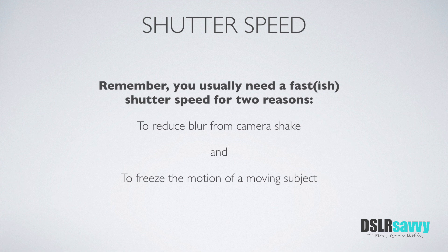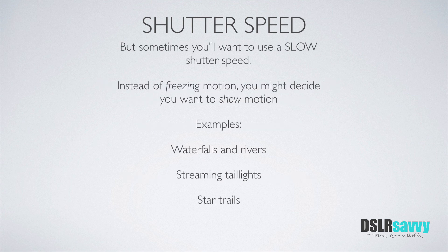To wrap up this lesson: in normal everyday hand-held photography, there are two reasons we're usually going for a fast-ish shutter speed — one is to reduce blur from camera shake, and the other is to reduce blur by freezing the motion of a moving subject. But that does not mean you always want a fast shutter speed. There are plenty of times when you might want a slower shutter speed — instead of freezing motion, you may actually want to show the motion. We'll talk about that in the next lesson.